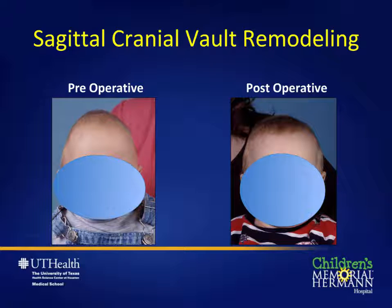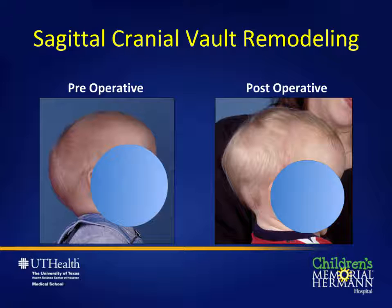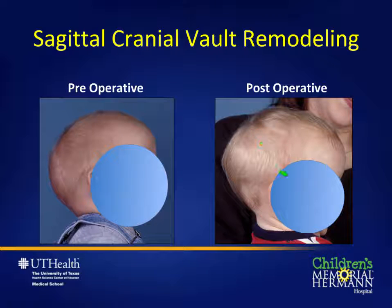Here is a post-operative case of a patient who underwent open cranial vault remodeling for sagittal craniosynostosis. On the pre-op picture the forehead is very narrow and the head shape is very elongated. In the post-surgery picture the forehead has been widened and some of the height is reduced. On the lateral view the elongated head and bossing of the forehead have been improved post-operatively, and the overall size of the skull has been enlarged to allow for additional brain growth.